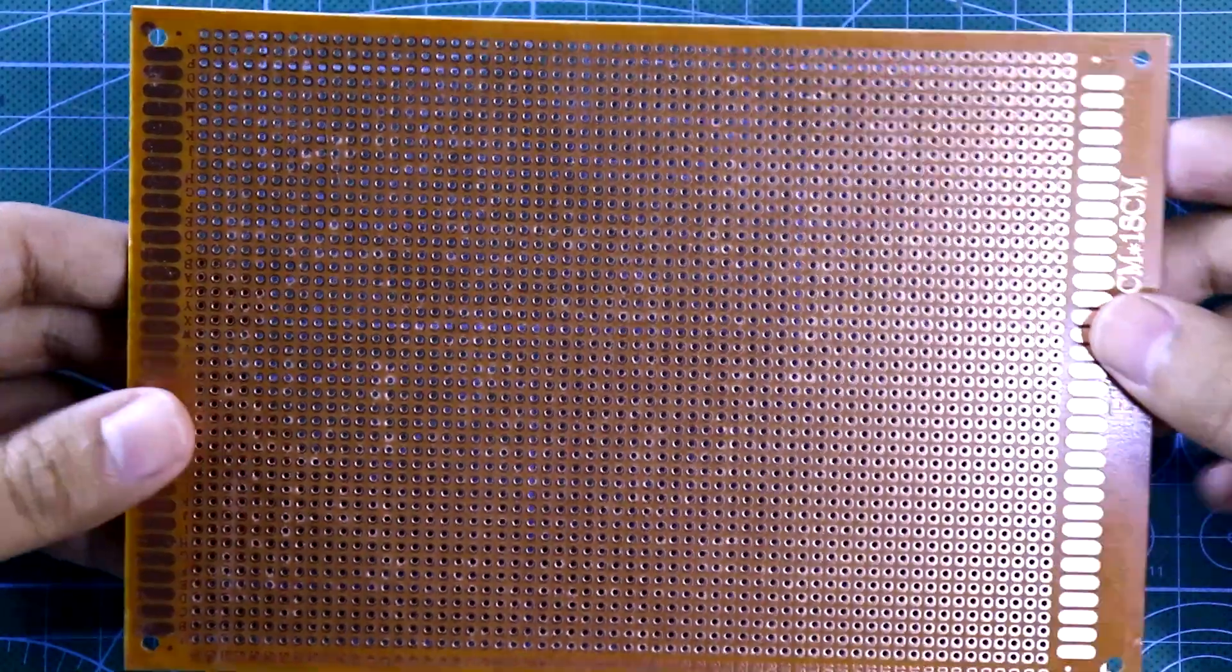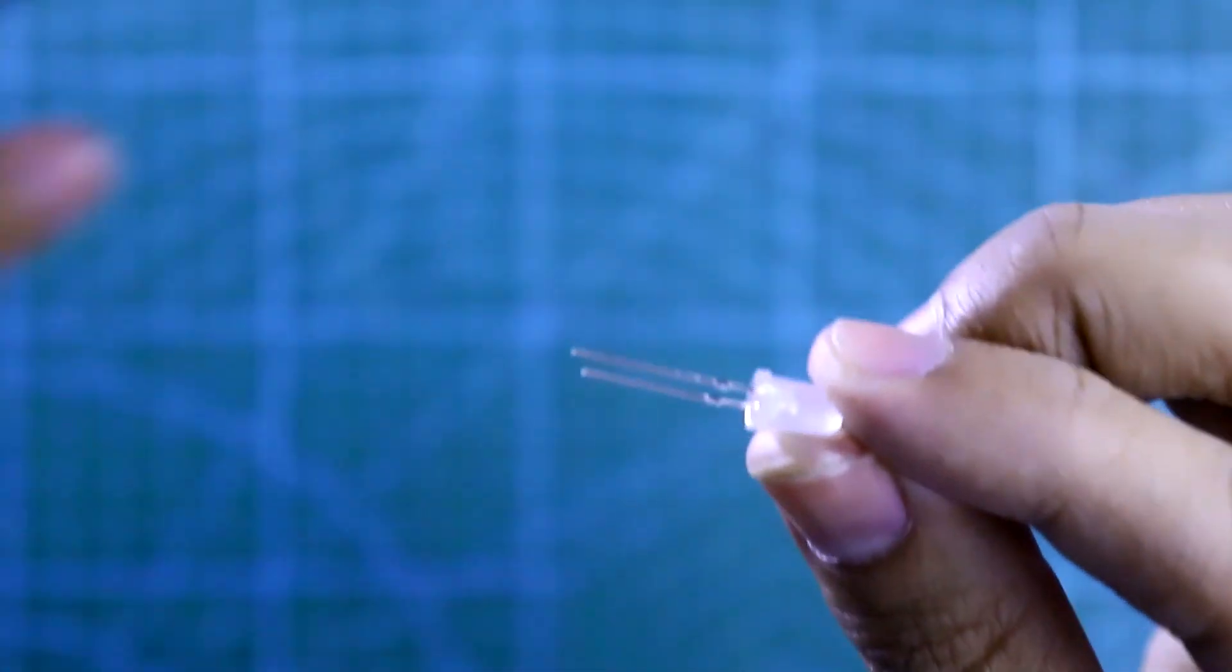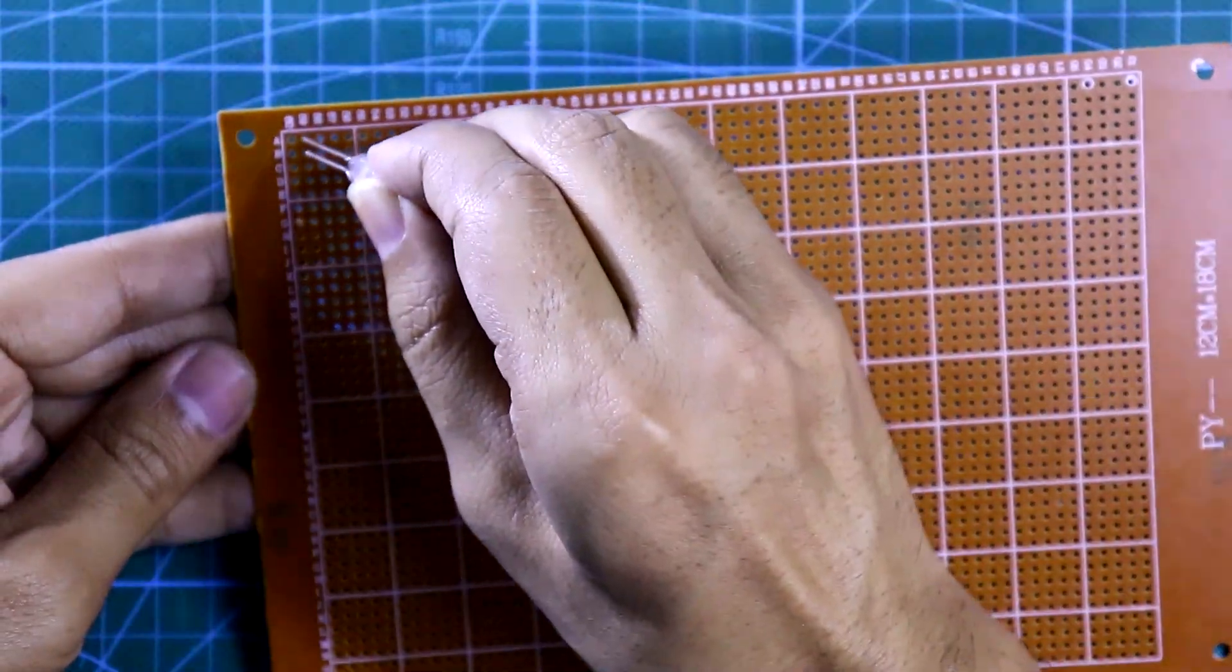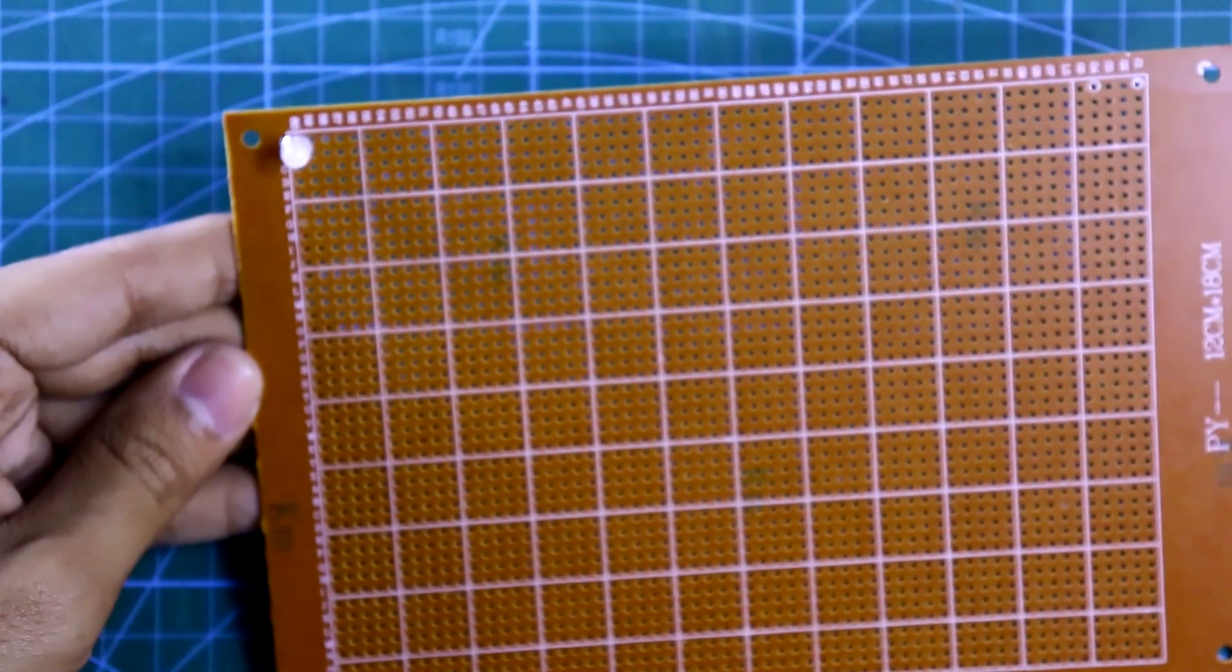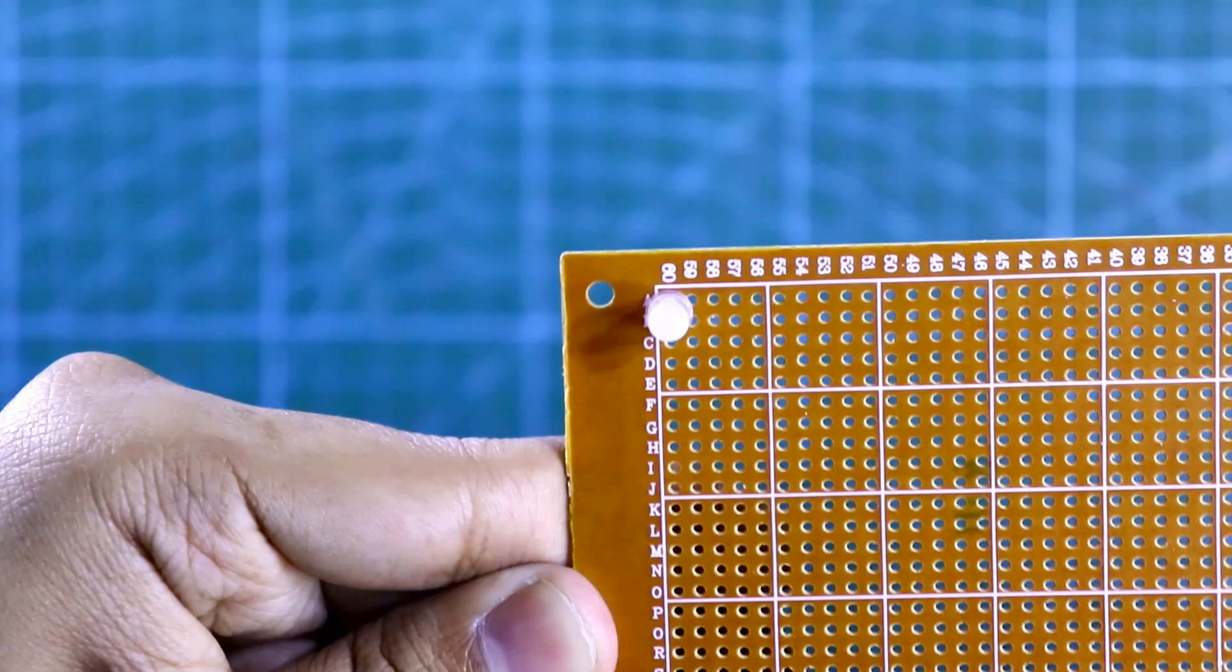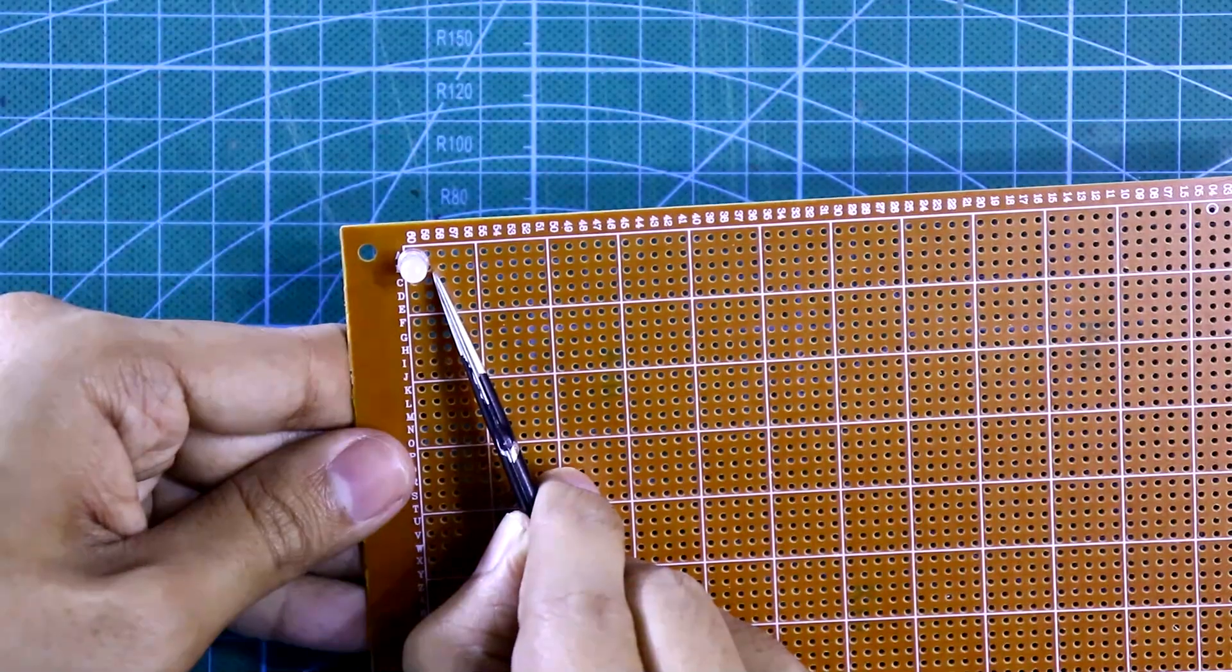The longer pin is positive and shorter is negative. I'm keeping the longer pin outside of this board. You can see the flatted edge is inside, round side is positive and flatted is negative.